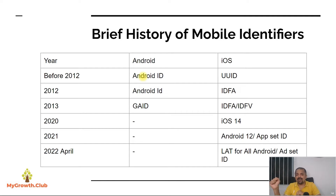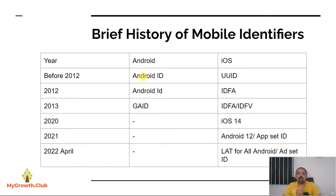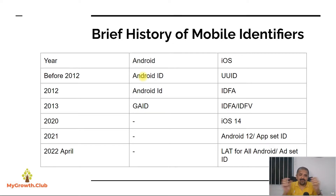Let's look at a brief history of mobile identifiers before we dive into the deep end of the changes. Before 2012 — between 2007-8 to 2012 — there was no concept of Advertising ID. There was an ID of Android and iOS installation on your device which was a persistent ID that couldn't be changed. For Android it was called Android ID and for iOS it was UUID. Advertisers used these because there was nothing else available for advertising, personalization, or analytics purposes. In 2012, Apple came up with IDFA, meant to be used for attribution, analytics, and personalization — the first time the concept of an advertising ID for mobile devices came up.